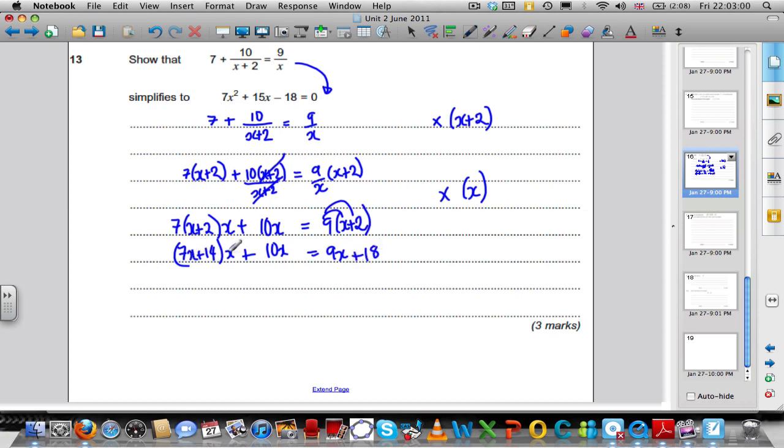7X times the X, really, I could really think of this X as at the front. It makes it easier. X times 7X is 7X squared. X times 14 is 14X. We've already got a plus 10X, and that's equal to 9X plus 18.